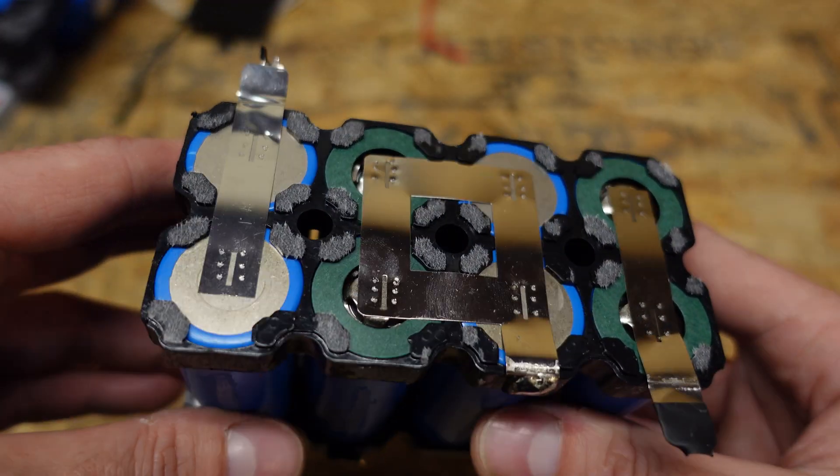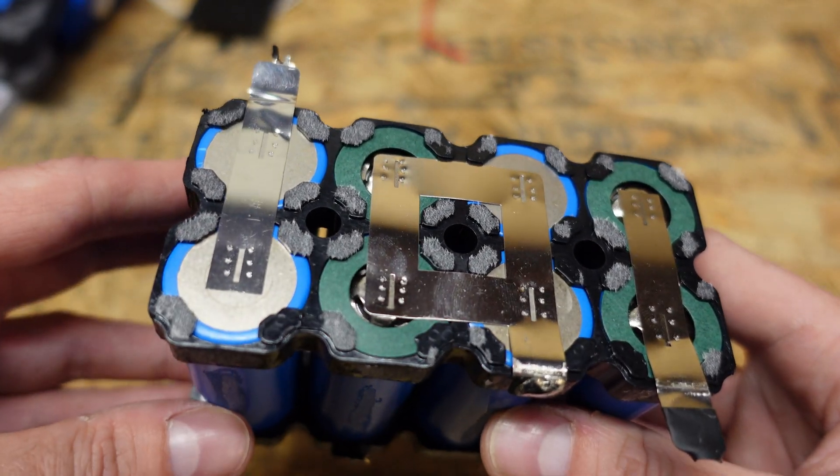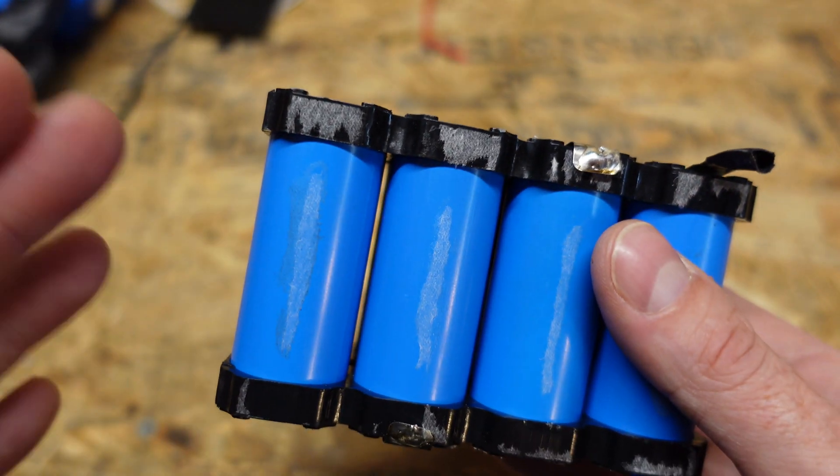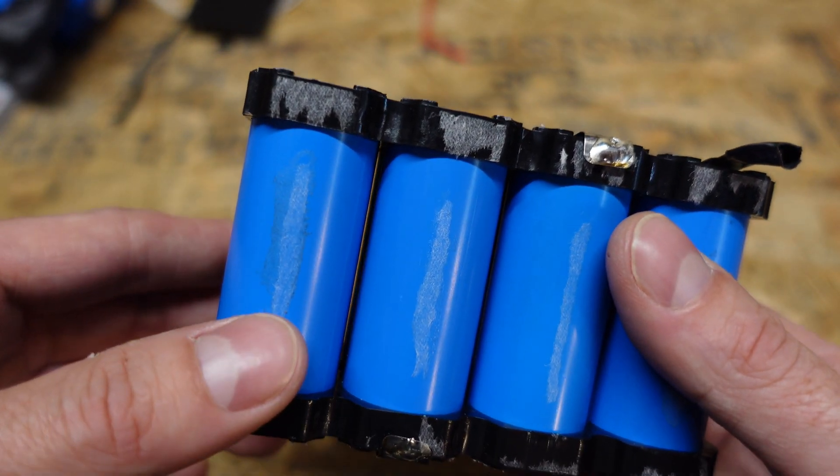There are eight cells here. They are wired in groups of two in parallel then wired in series to make a 12 volt battery. Since this is a 7 amp hour battery each of these cells would need to be 3500 milliamp hours.